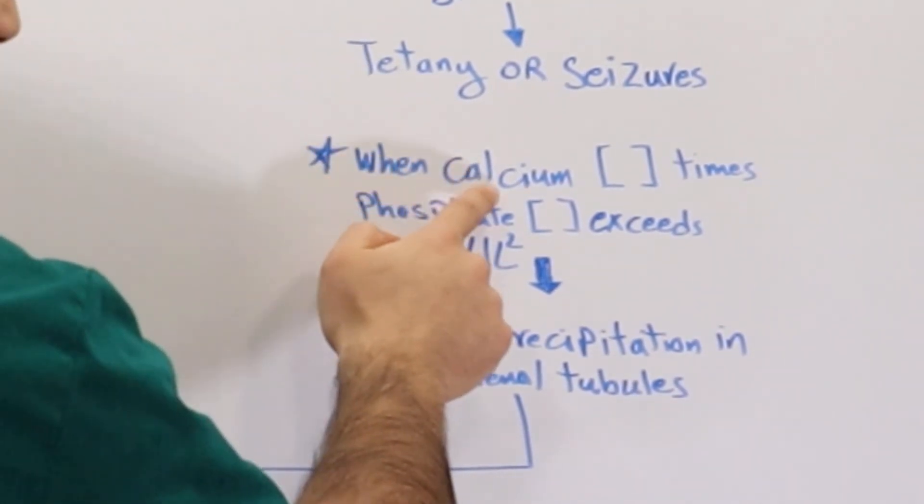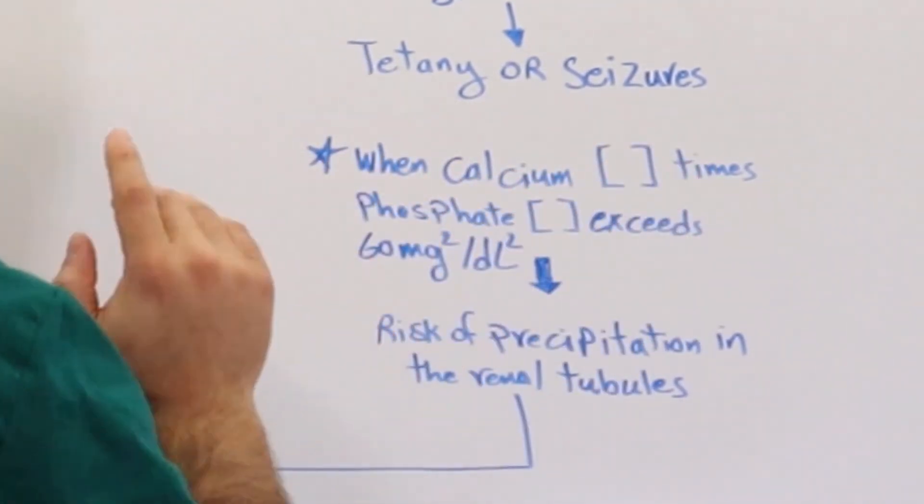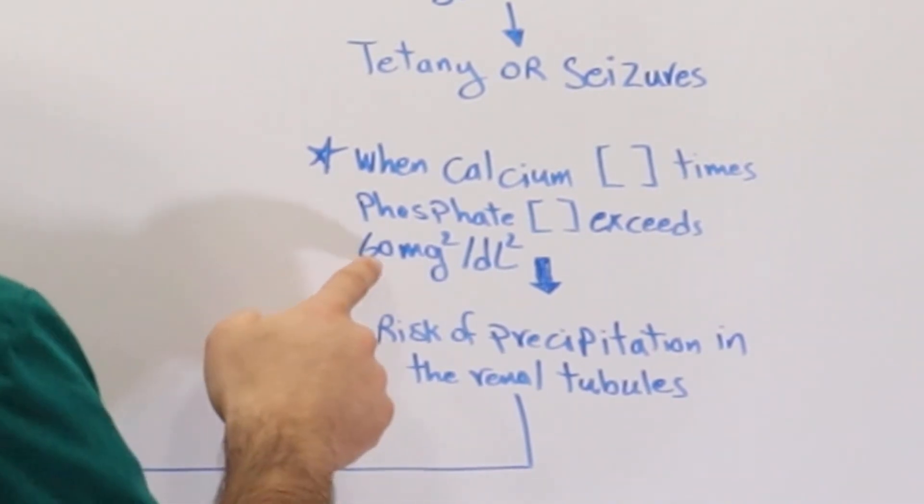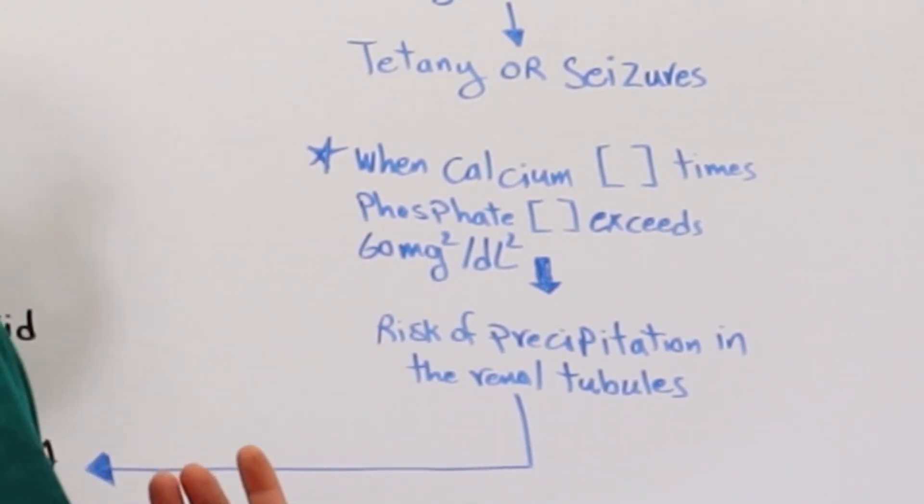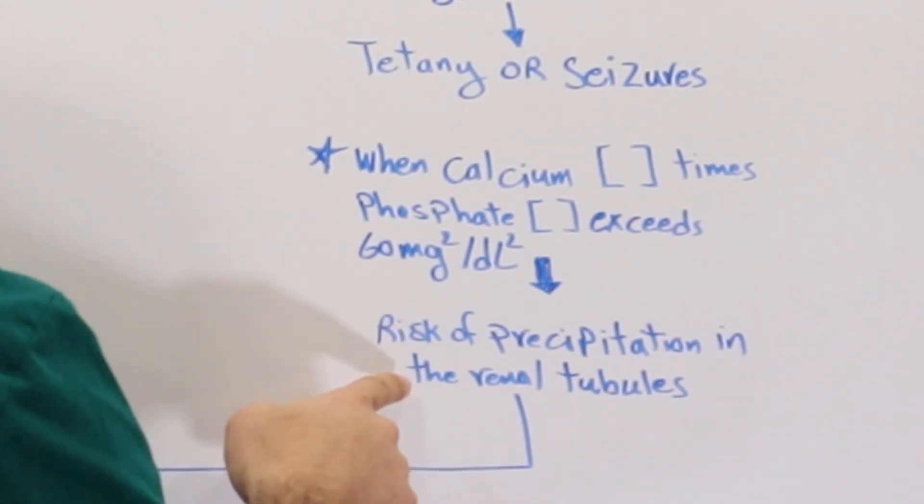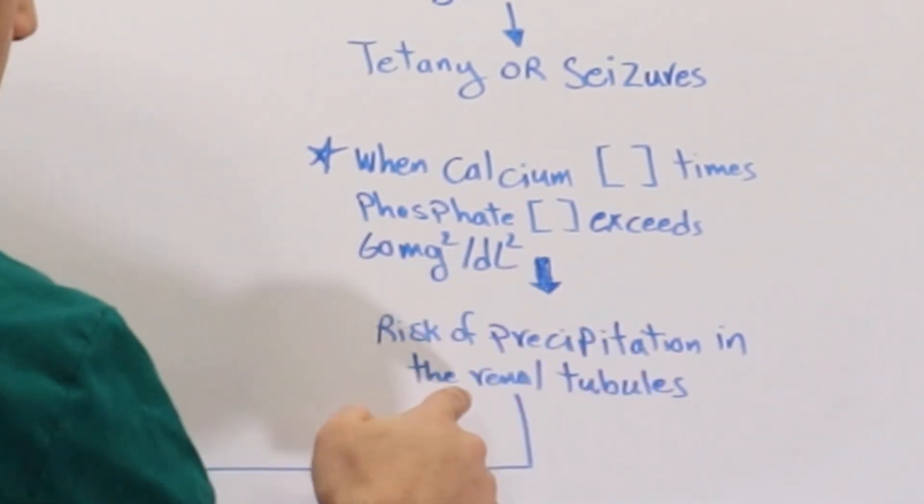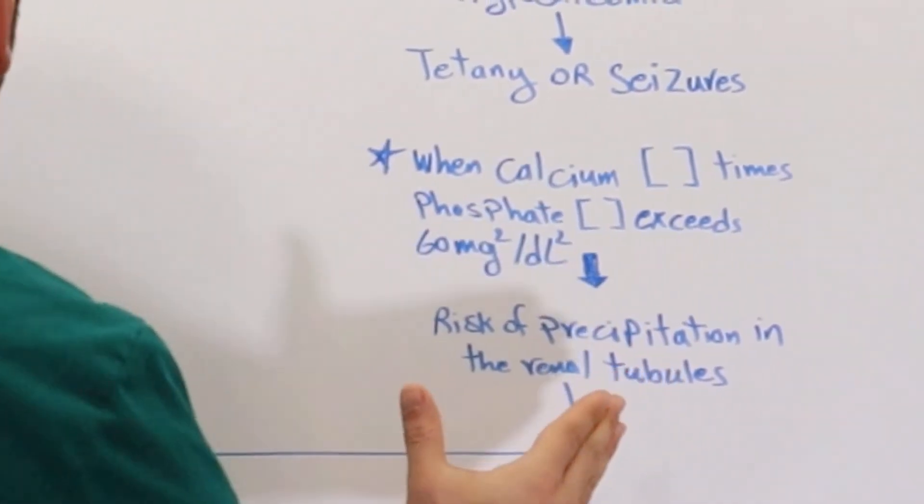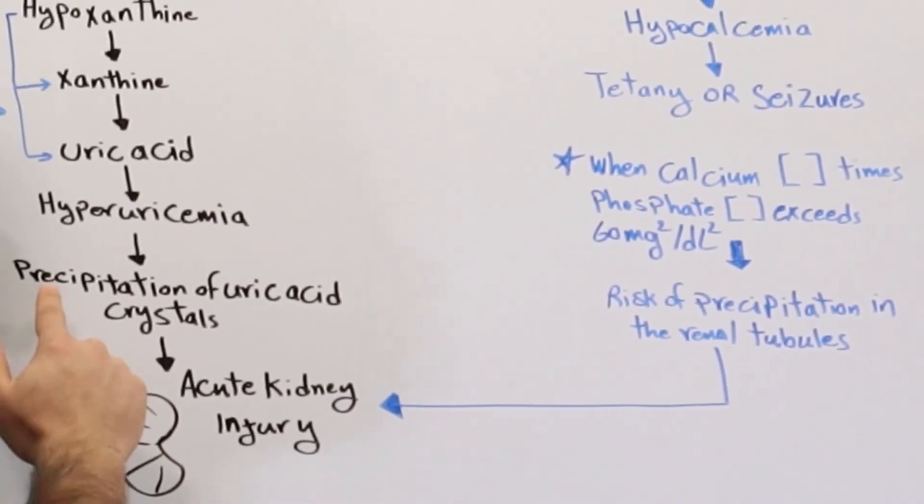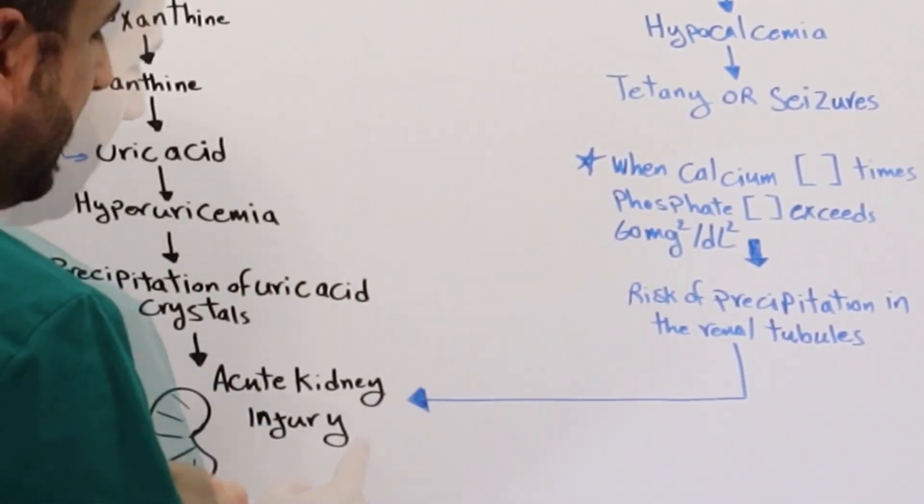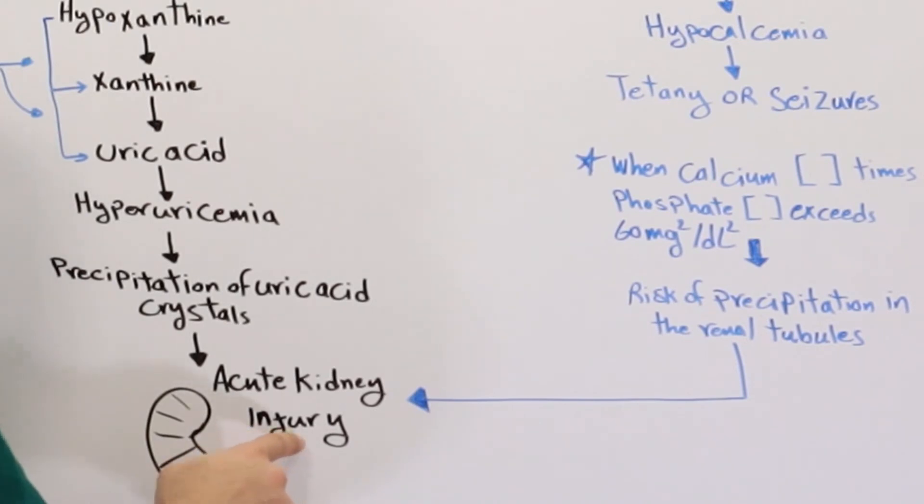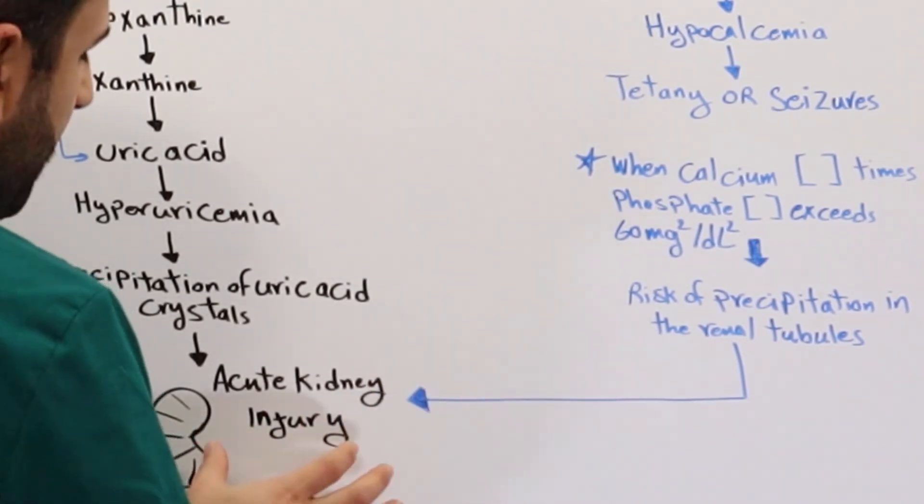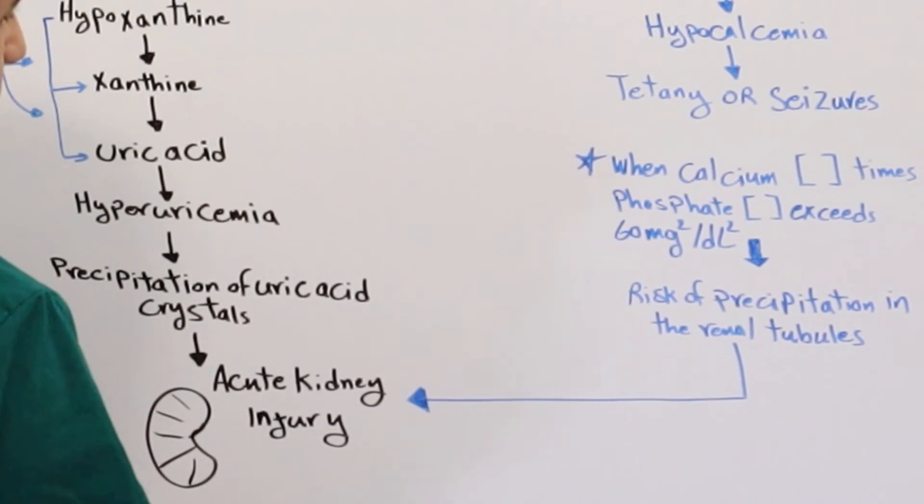When calcium concentration times phosphate concentration exceeds 60 milligrams squared per deciliter squared, we end up having risk of precipitation in the renal tubule, exactly where we ended up having over here with uric acid, leading to AKI, which is acute kidney injury. So we can have this condition from two different pathways.